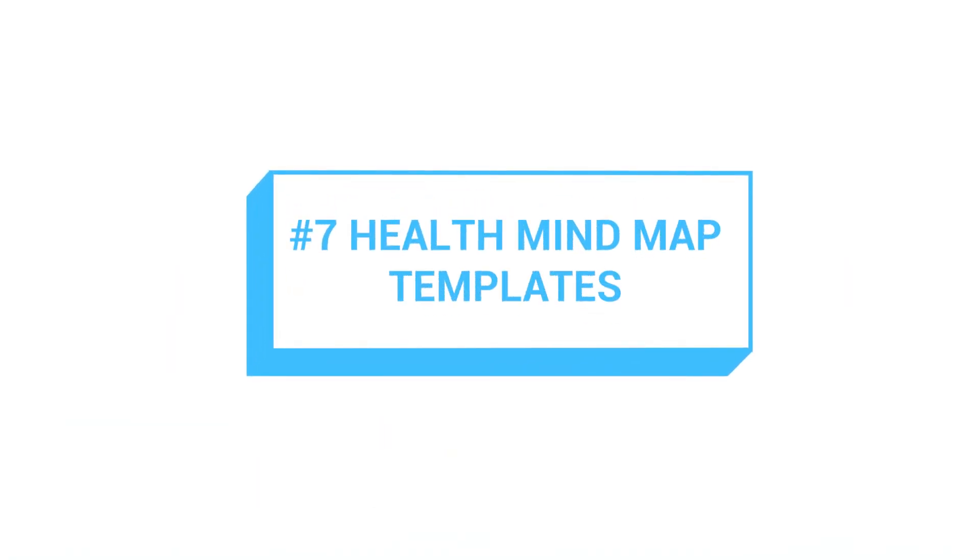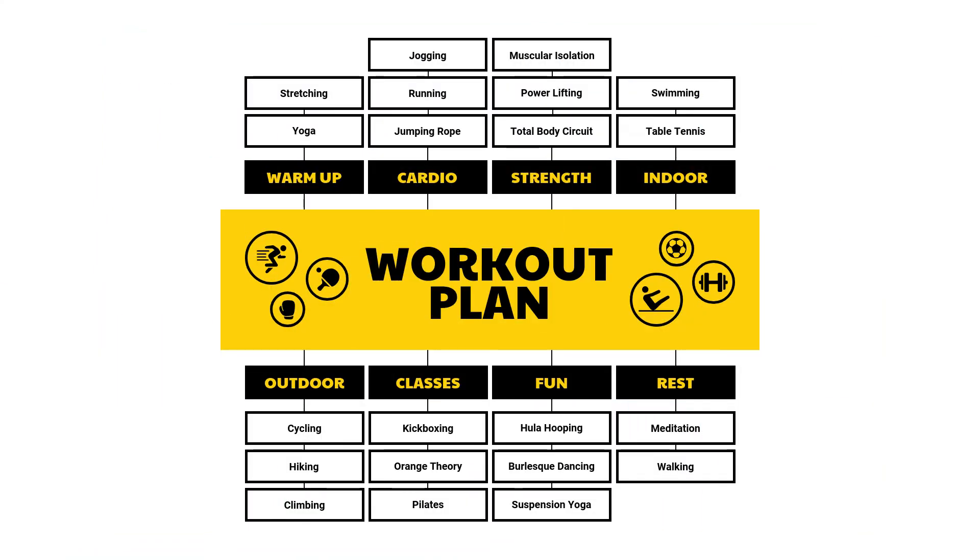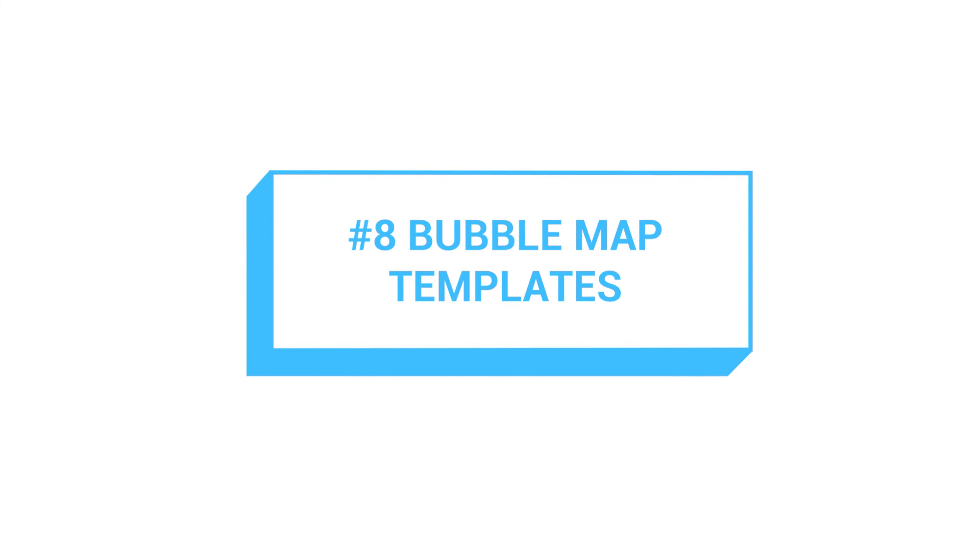Number seven: health mind map templates. Whether you're a health or fitness solopreneur or running a medical clinic or wellness business, you need mind maps that explain key health concepts or your business offerings. You can add mind maps to your flyers and posters, social media channels, website blog or sales pages, and more. Bubble maps are a simple but effective way to explain ideas — they describe the qualities of an event, person, item, or idea, with the thing being described in the center and adjectives or phrases in the outside circles.